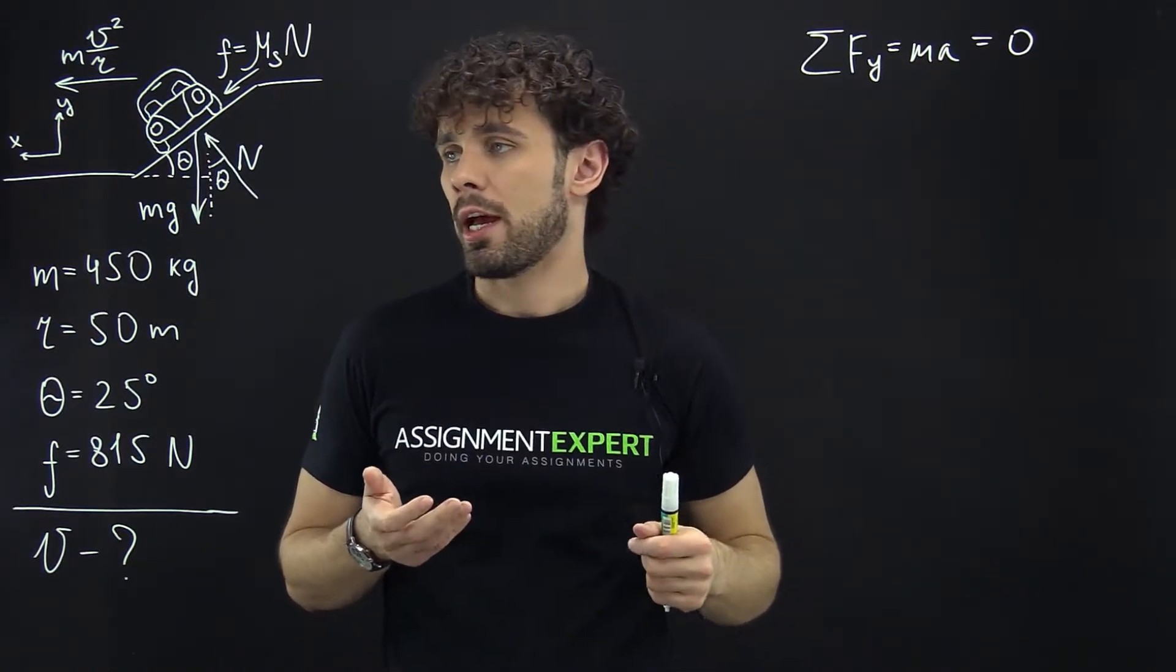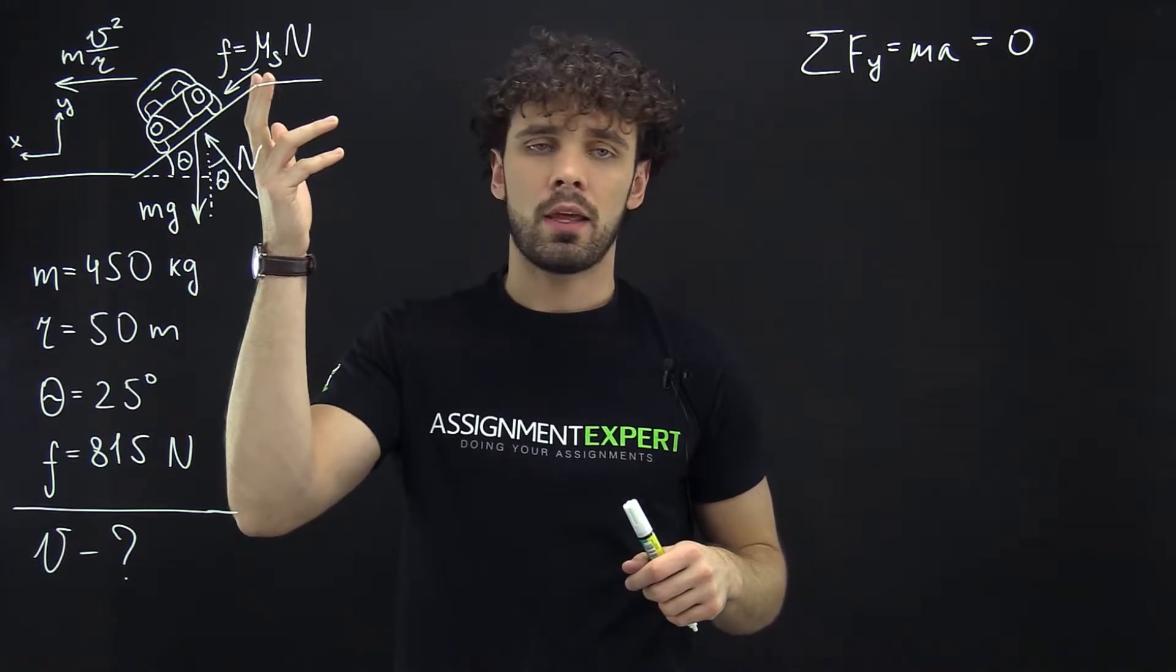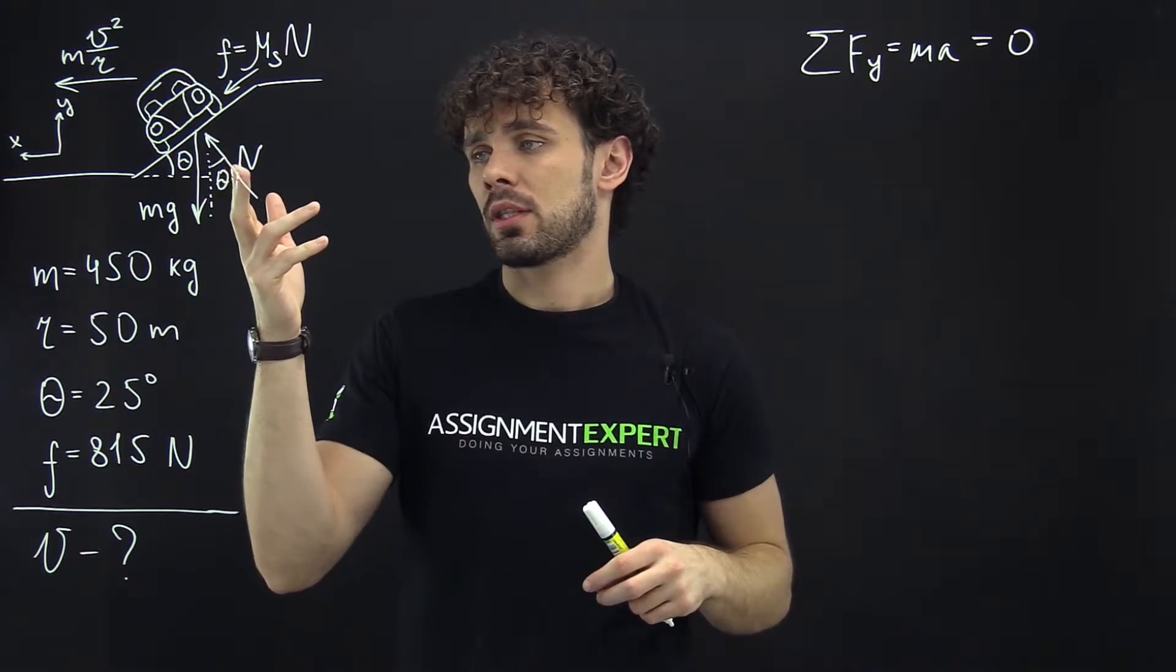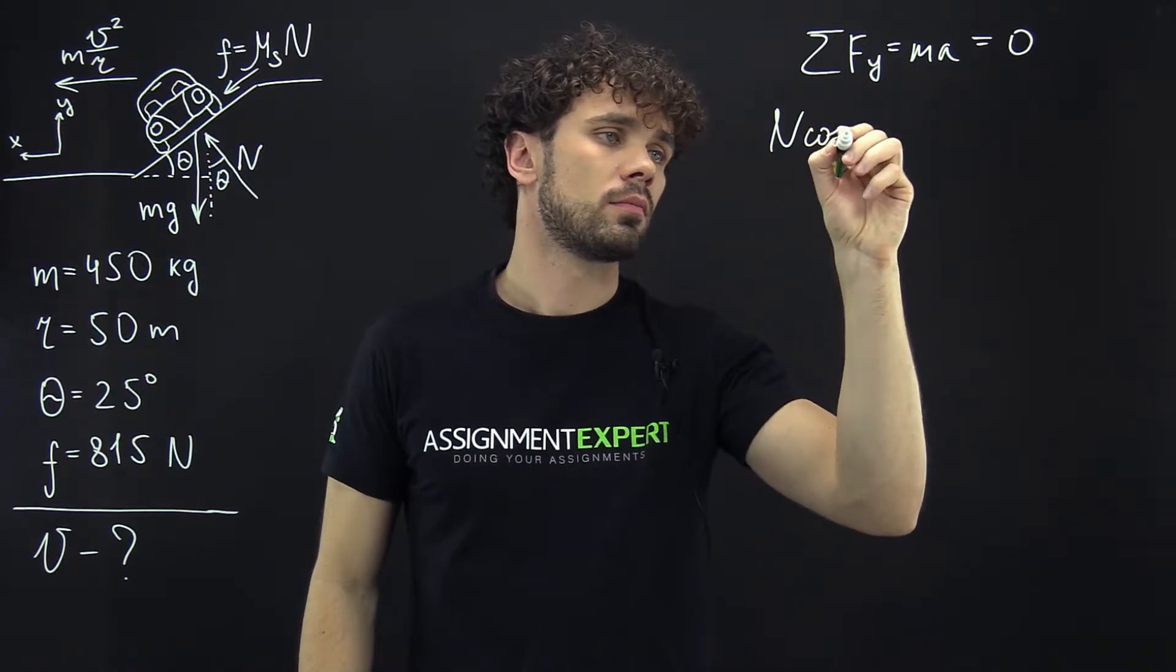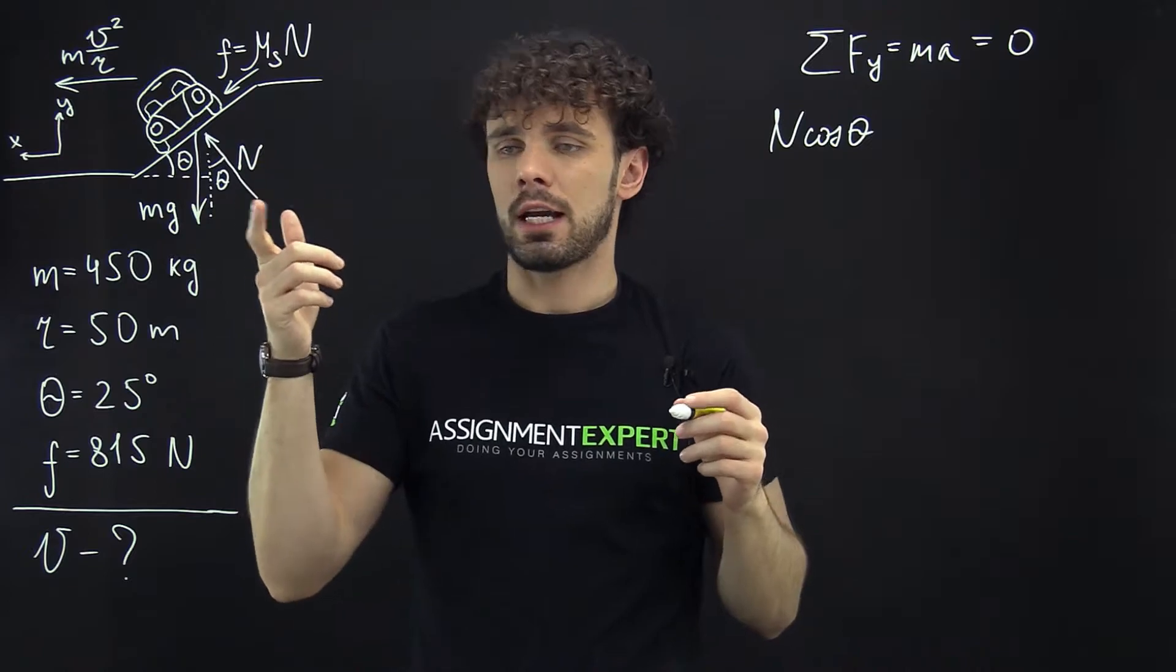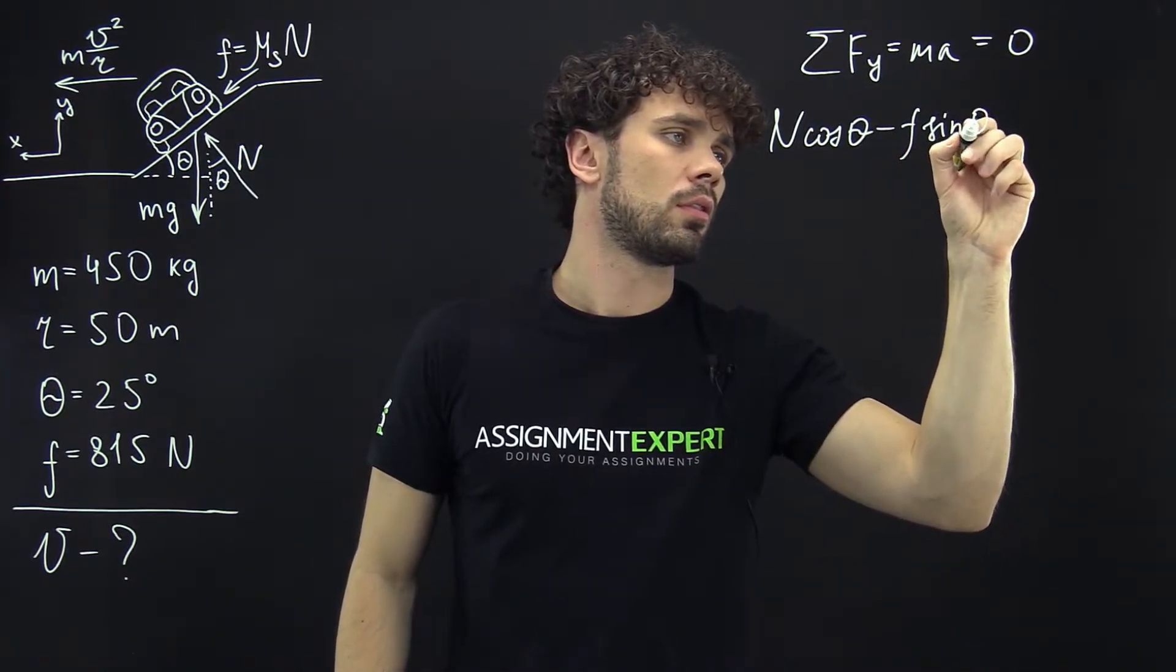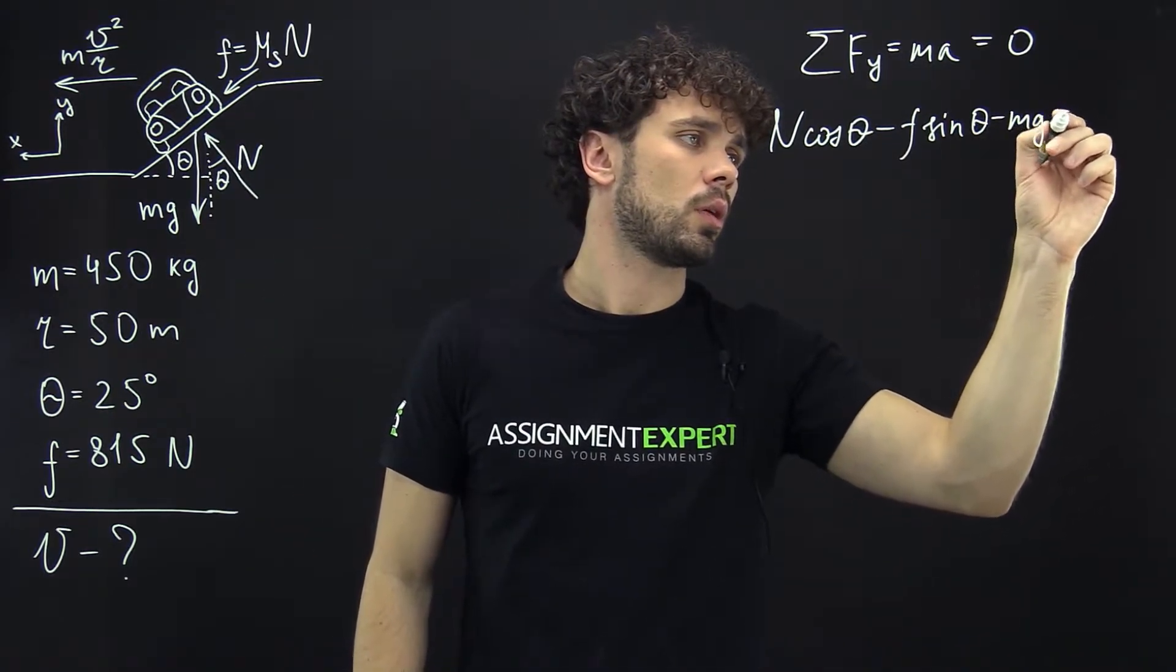So what do we have? We have the force of gravity, the reaction force, and the force of friction. We have N cos θ minus F sin θ minus mg equals zero.